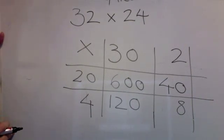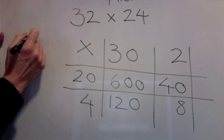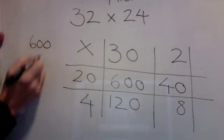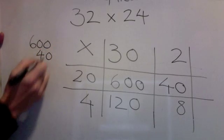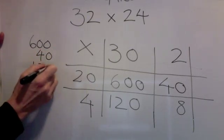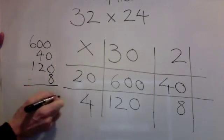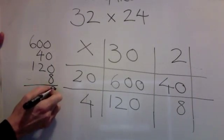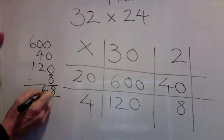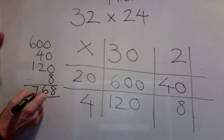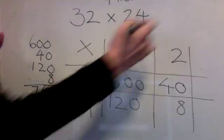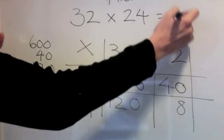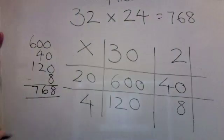Now I just need to add them all together. So I have 600, 40, 120, and 8. Units first, 8. 4 and 2 is 6. 6 and 1 is 7. 768.